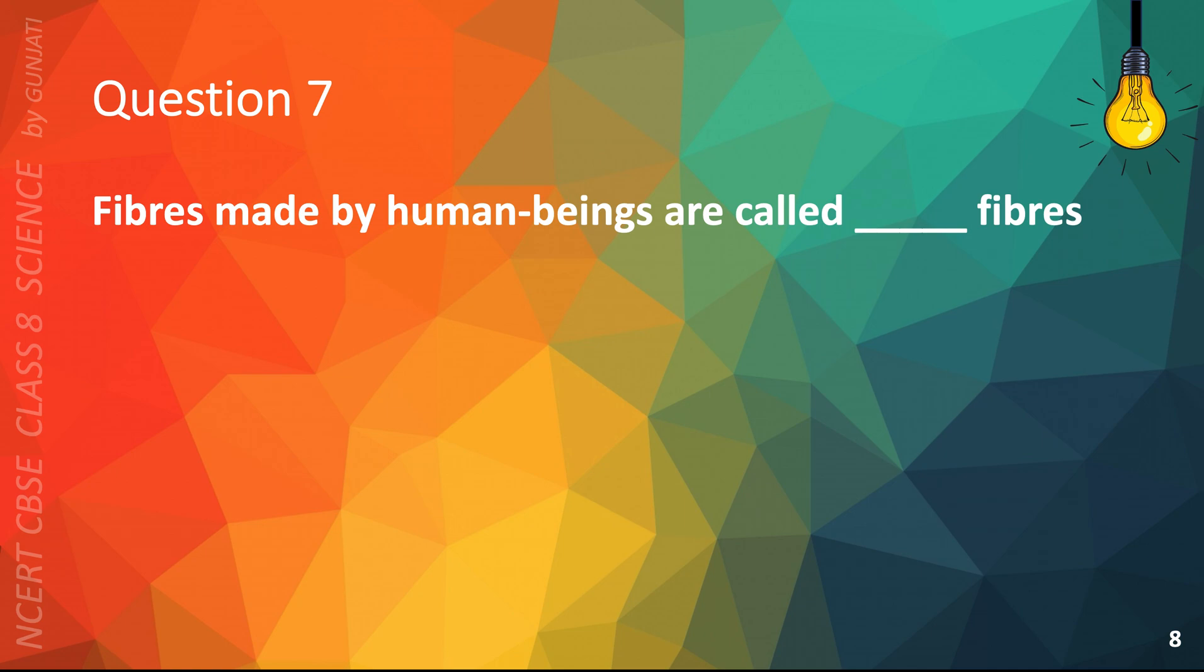Question 7. Fibers made by human beings are called blank fibers. A. Natural, B. Animal, C. Jupiter, or D. Synthetic. The correct answer is D. Synthetic.